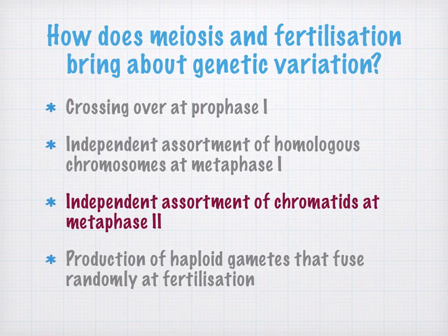Then you've got independent assortment of chromatids at metaphase II — not chromosomes, chromatids. This further produces variety in the same way as independent assortment of chromosomes at metaphase I.